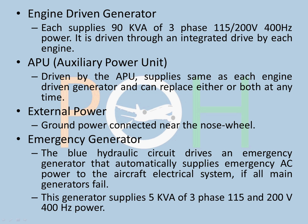Let's begin with understanding each component. Engine driven generator: it is driven through the integrated drive by each engine. So if the engine is rotating, there is an integrated drive connected and the generator rotates, supplying 90 kVA of 3-phase, 115 to 200 volts, 400 Hz of power. kVA is a unit of apparent power; 400 Hz is the frequency. Both engines have an engine driven generator located underneath the engine.